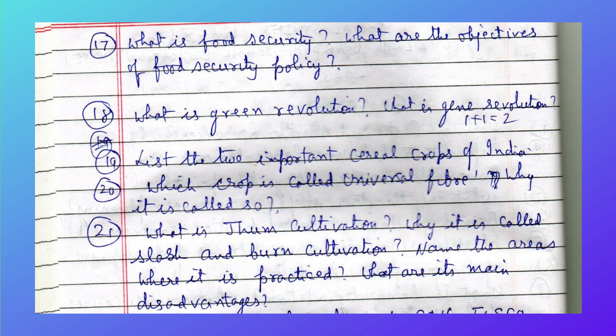List the two important cereal crops of India. Which crop is called the universal fiber and why is it called so? What is Jhum cultivation and why is it called slash-and-burn cultivation? Name the areas where it is practiced.